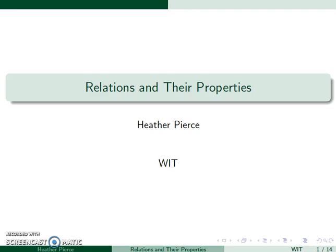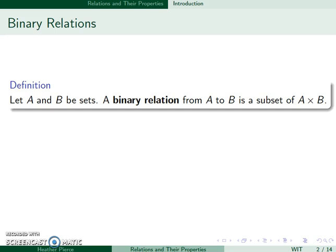Next, we'll look at relations and their properties. So if A and B are sets, a binary relation from A to B is a subset of A cross B. So it's just a set of ordered pairs.